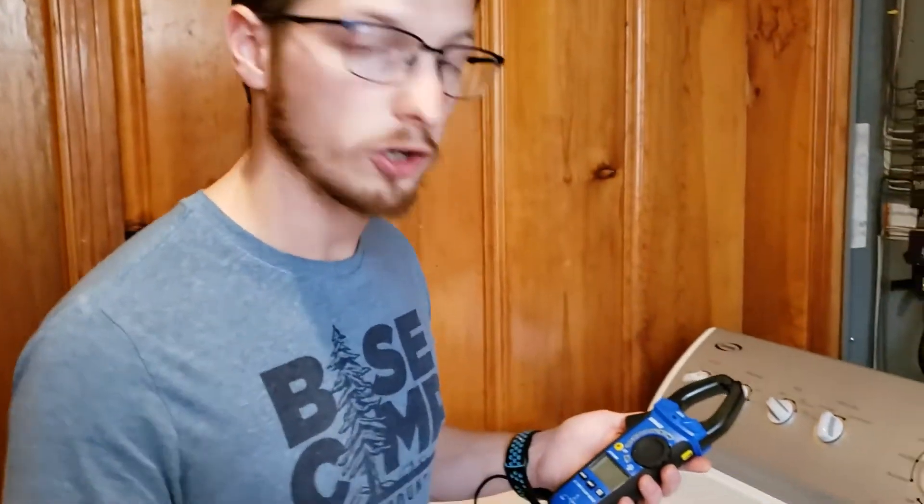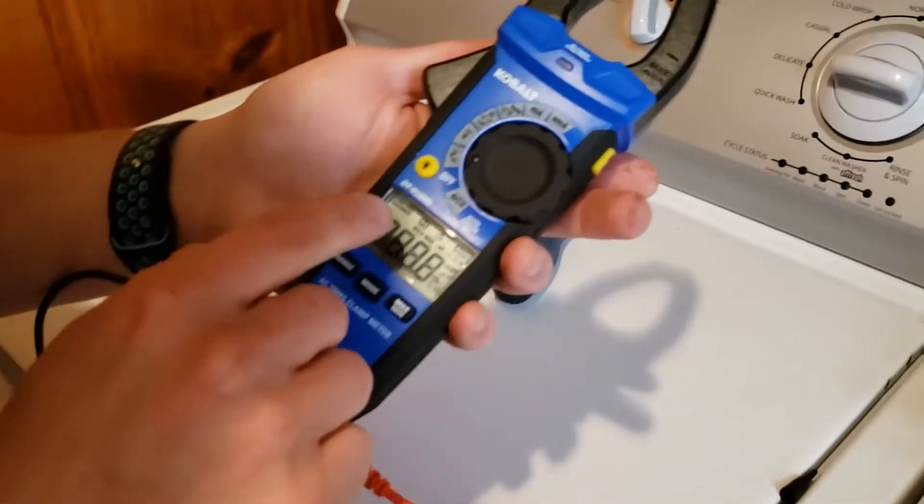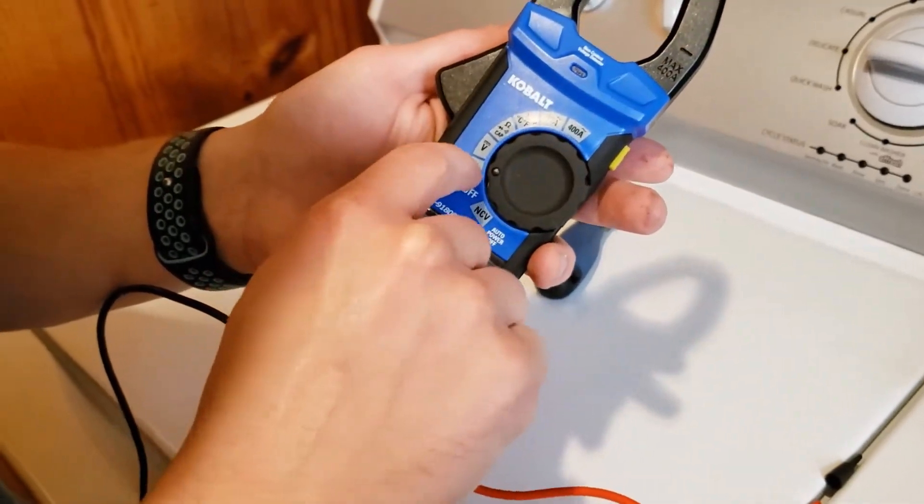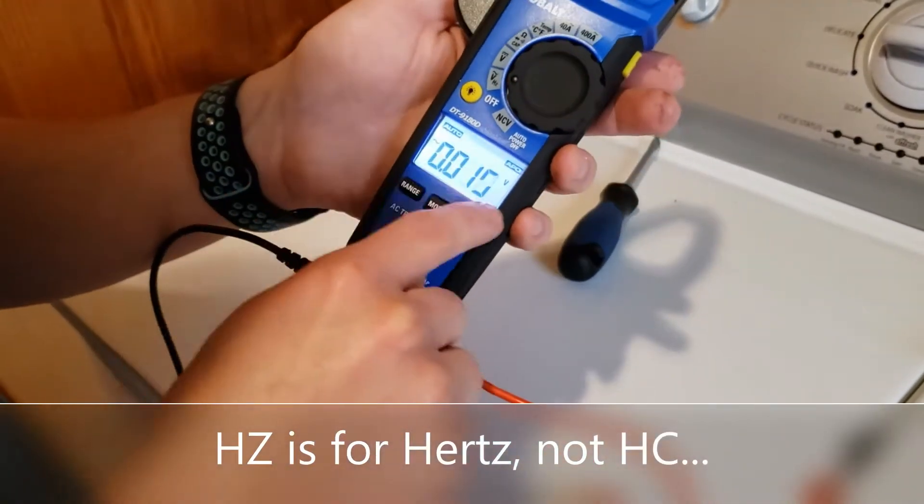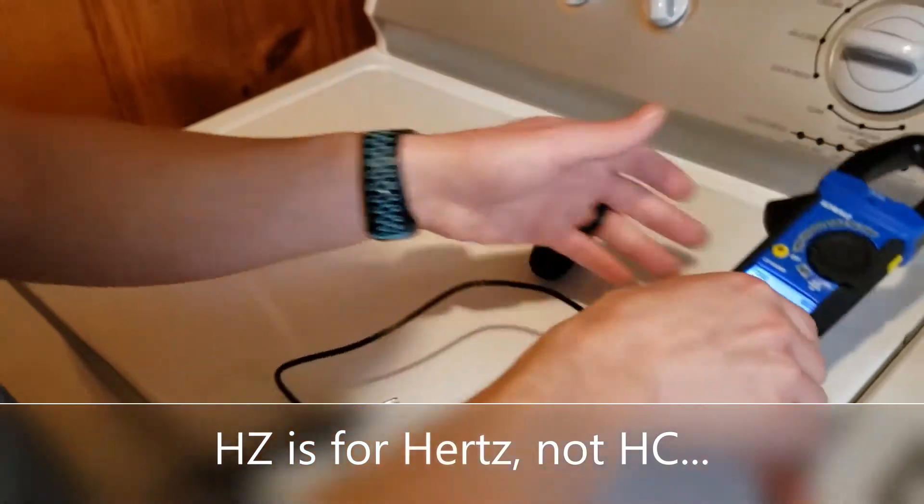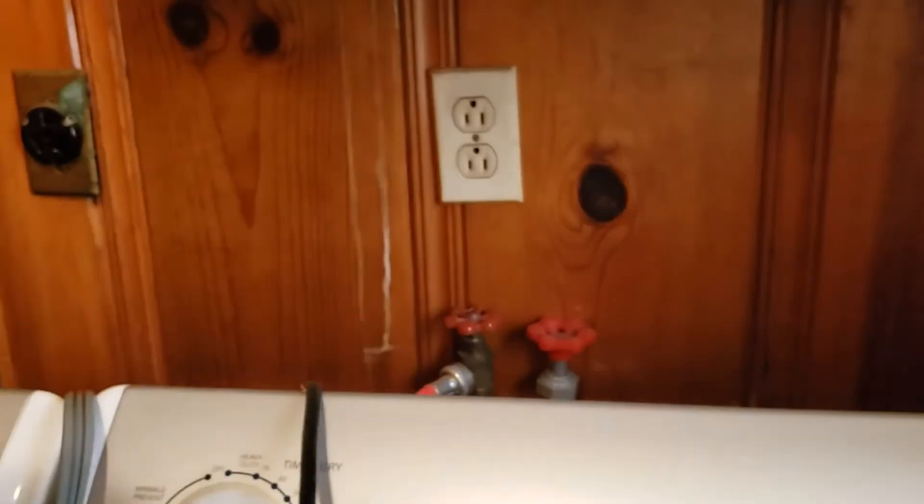The next thing you could do with a multimeter is check for alternating current voltage. You click over and you see this is volt, it's got a little wavy line and it's got HC, which stands for Hertz. The really cool thing about this is when you're checking voltage, you can go right here to your washer. I'm going to just unplug it so we don't have anything.